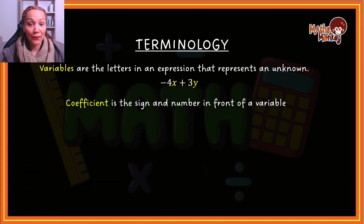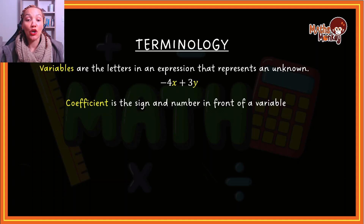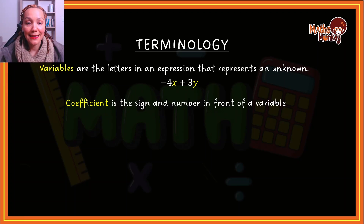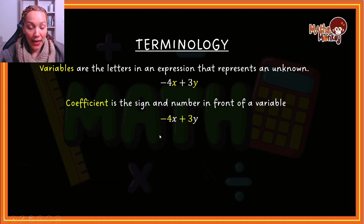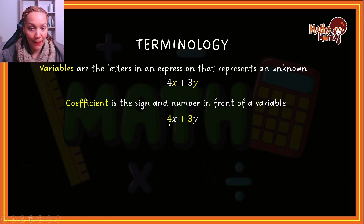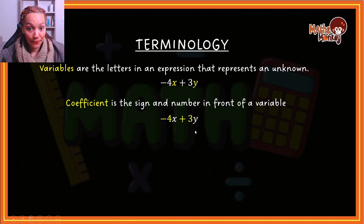The second thing I want you to understand is that within variables — remember I said it's a combination of numbers and letters — when we're working with numbers and letters, we have what is called a coefficient. A coefficient is the number and the sign that's in front of a variable. So if I look at this expression, x is the variable and it's got a coefficient of minus 4. y is a variable and it has a coefficient of positive 3.